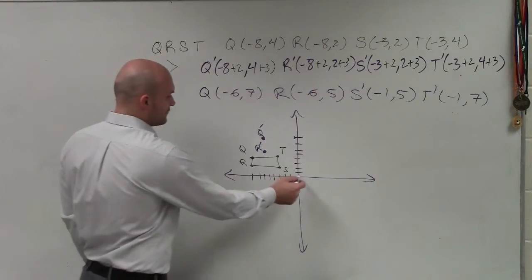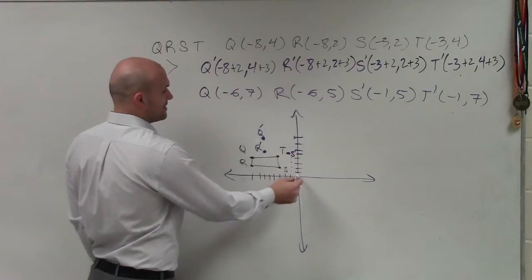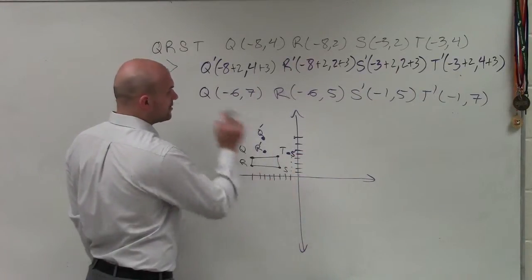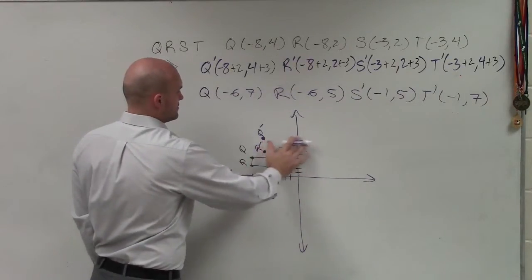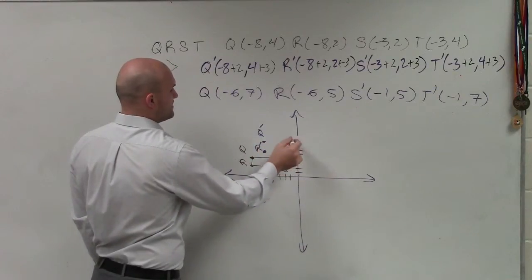So that would be R prime. S prime is negative 1, 5, negative 1, 1, 2, 3, 4, 5. That's S prime, and then I have negative 1, it's 7, not 8.